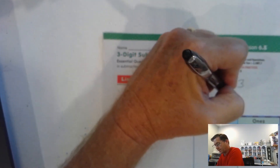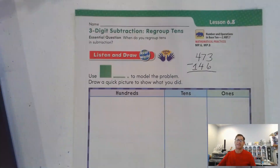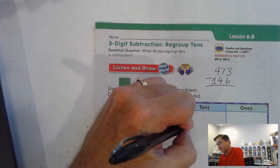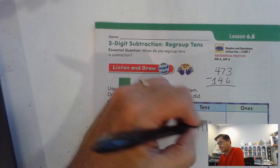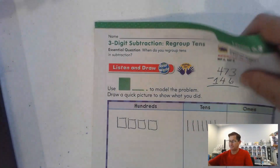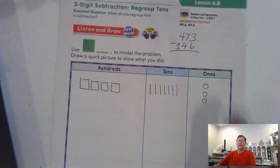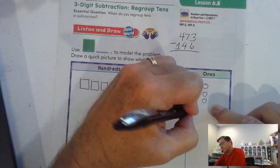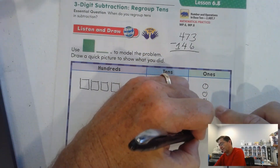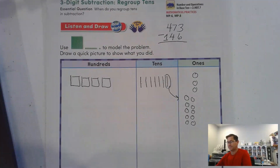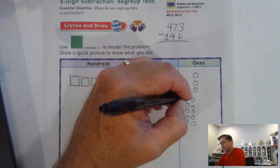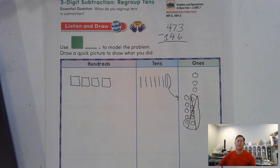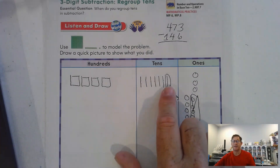Is this what you came up with? 473 minus 146. So we need to model this. 100, 200, 300, 400. We're modeling 473 because that's what we have — so 7 tens and 3 ones. Now, can I take 6 ones from the 3 ones? No. So we need to regroup. We're going to trade 1 of the 10s for 10 ones. Now we can take away 6 ones — 6 ones from 13 ones. And then we have 6 tens remaining after trading the 1 ten for extra ones.